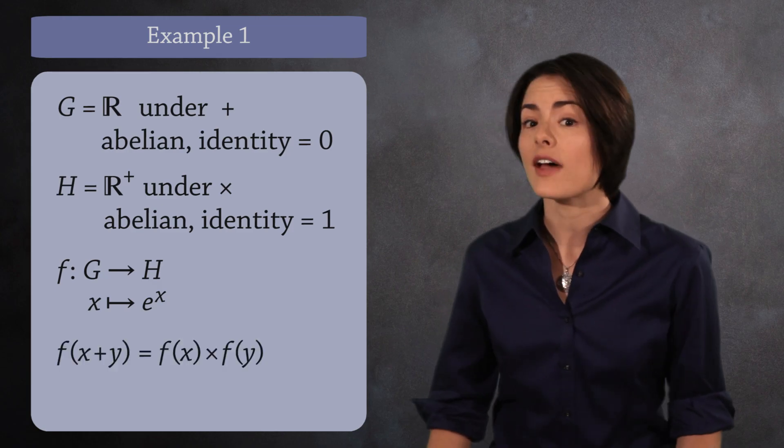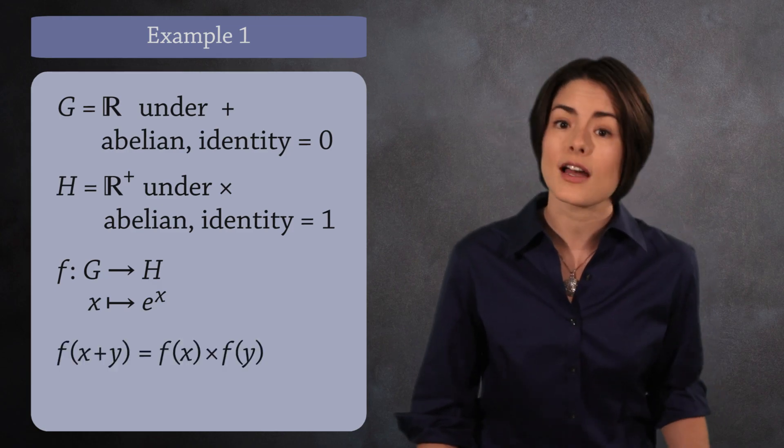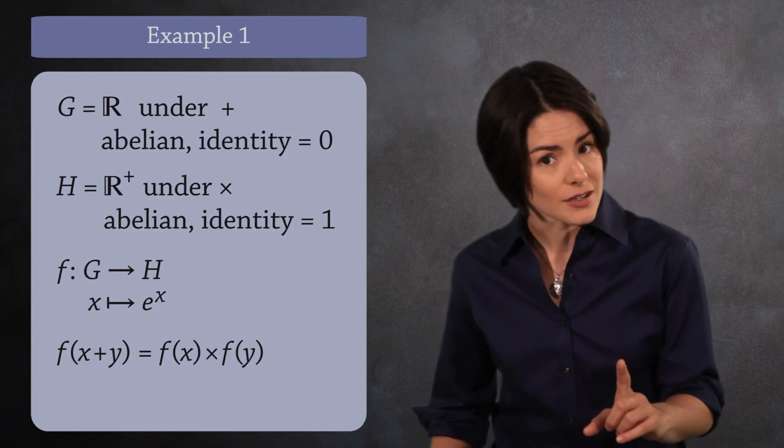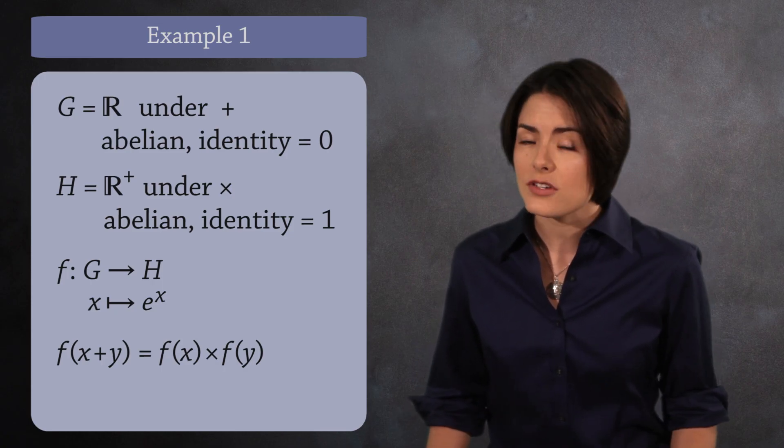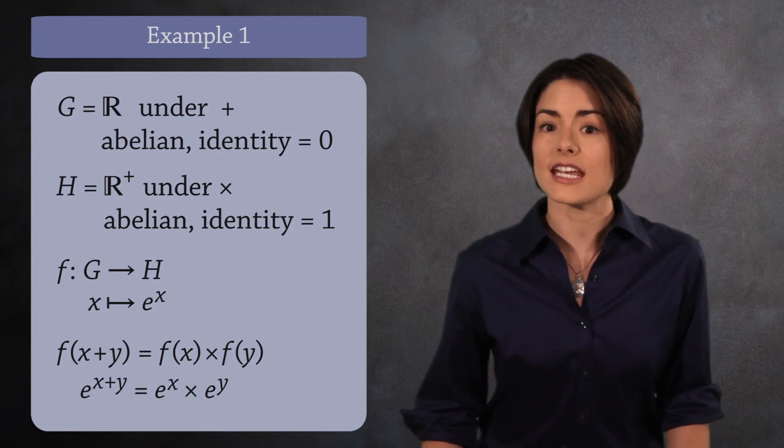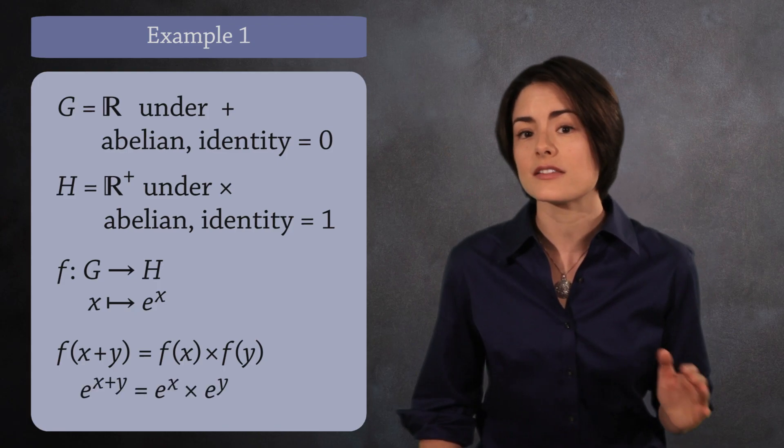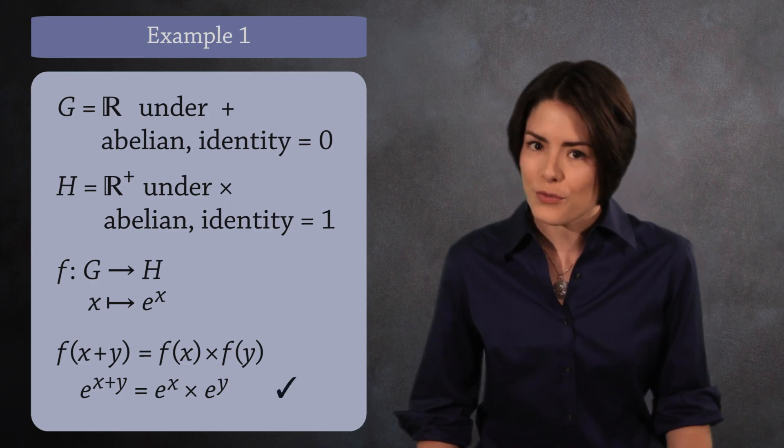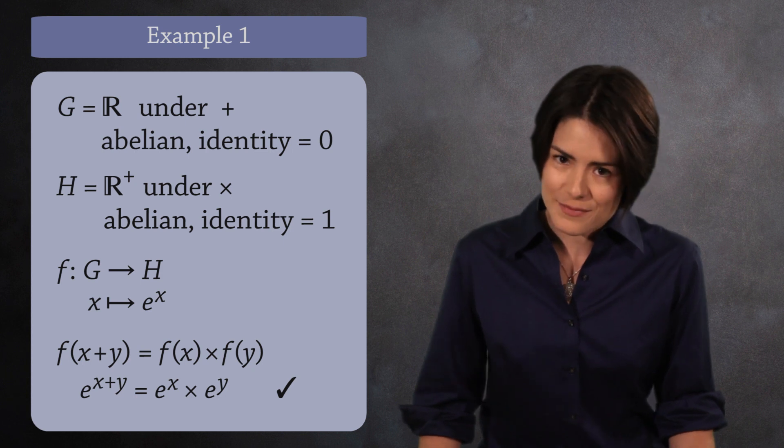we need to verify that f(x+y) equals f(x) times f(y). Don't forget that the group operation for G is addition, while the group operation for H is multiplication. By the definition of f, this says that e to the x plus y equals e to the x times e to the y. And this is true. This is one of the rules of exponents. So f is a homomorphism.